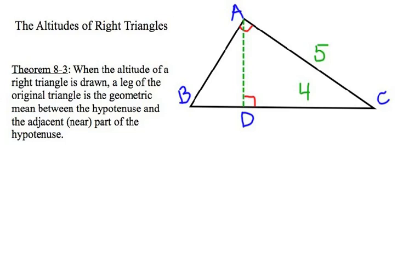So, what is the hypotenuse BC of this triangle when the leg AC is 5, and the near part of the hypotenuse is 4 when we draw the altitude? So, the proportion is going to be this.